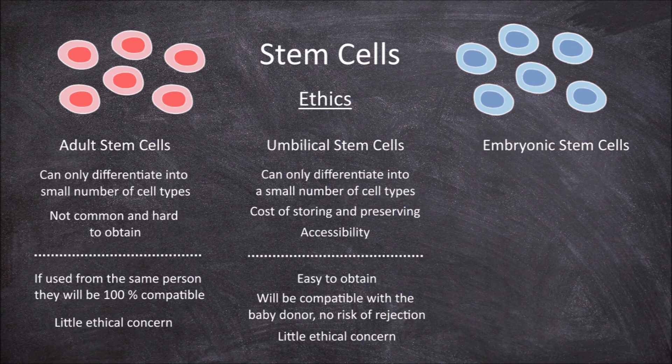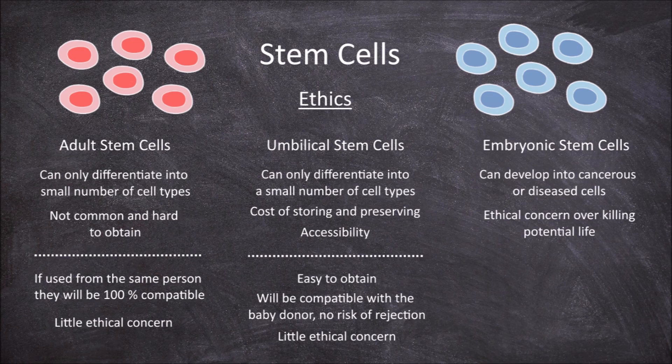Embryonic stem cells can come from early stage embryos, specifically from blastocysts. A drawback is that there is the potential for embryonic stem cells to develop into cancerous or diseased cells. There are also ethical considerations with this source of stem cells, as it requires the destruction of the embryo, and every embryo is a potential human — which to some is considered unethical to cause harm or kill this potential life.